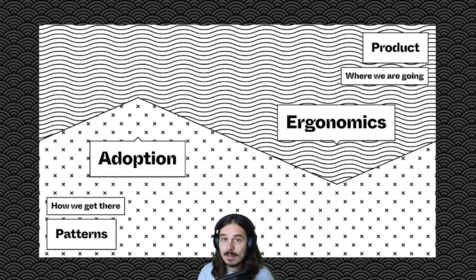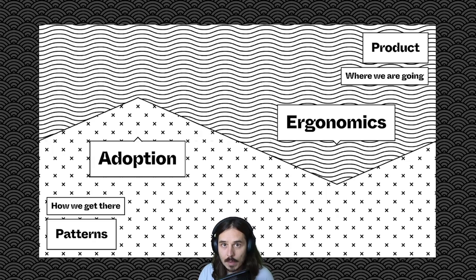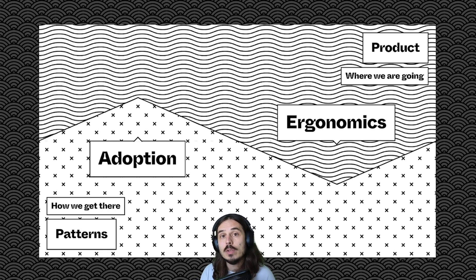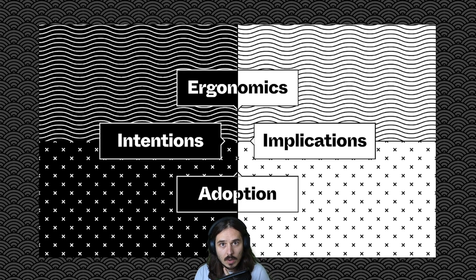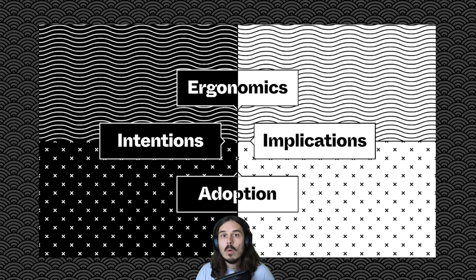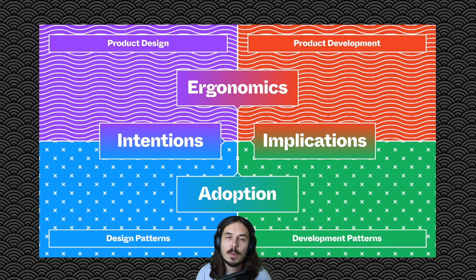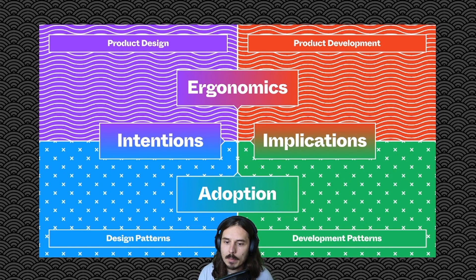Ideally this is a positive conversation where both sides understand where each other are coming from, but it's not always the case. A lot of times there can be tension, especially when you don't understand where the other person is coming from. Horizontally, we have this intentions-implications conversation going back and forth — here's the intent from design, here's the implications from development. Vertically, we have the conversation about adoption and ergonomics. This is really firing on all cylinders when everyone understands where each other are coming from.